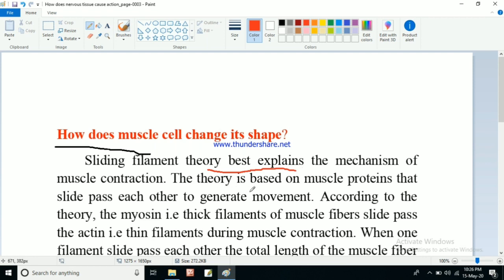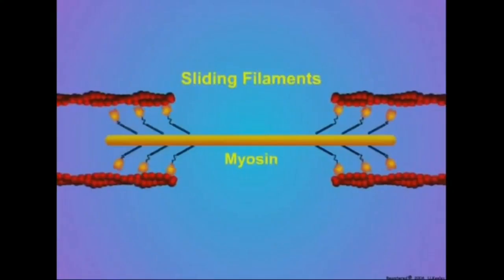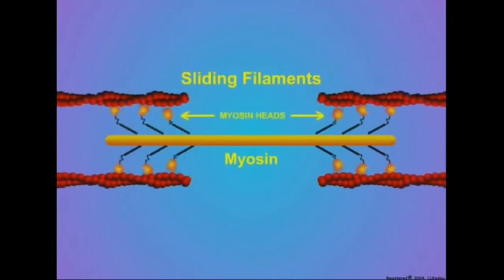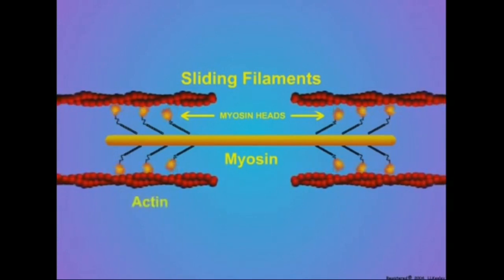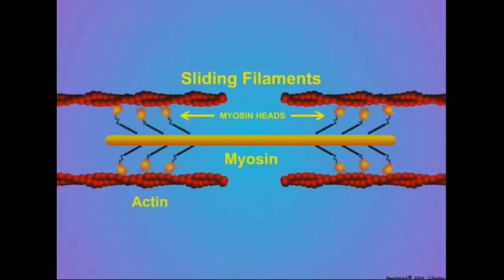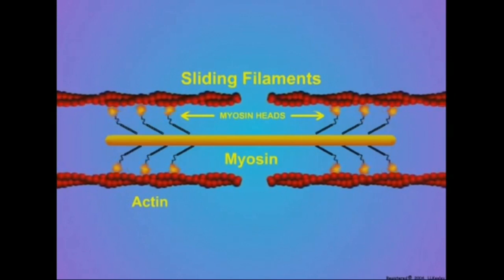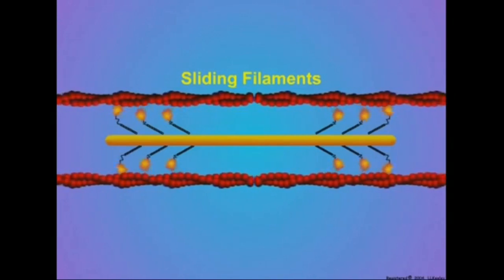The sliding filament theory best explains the mechanism of muscle contraction. The theory is based on muscle proteins — actin and myosin — that slide past each other to generate movement. According to the theory, the myosin (thick filament) slides past the actin filament (thin filament) during muscle contraction, which ultimately decreases the total length of the muscle fiber.